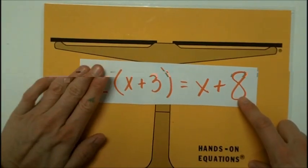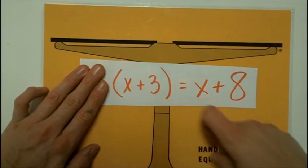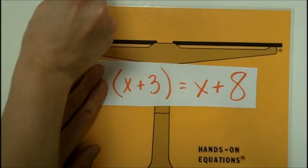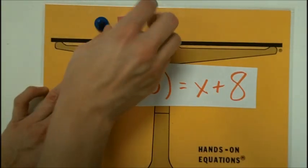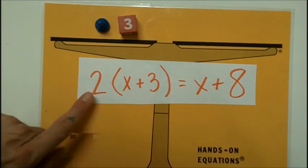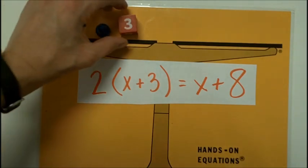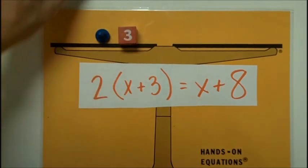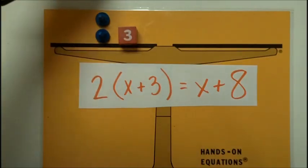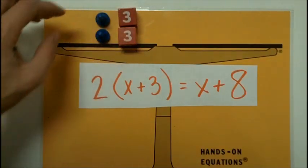So we're going to show that by first covering up the number in front and building x plus 3, or putting on x plus 3. And then revealing the two to say double it. And when we show something doubled, I want you to show it stacked on top of each other, so that you can see both.